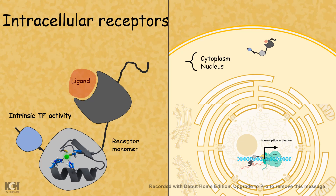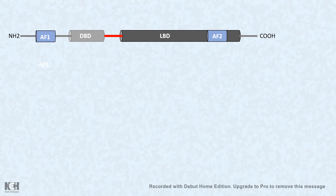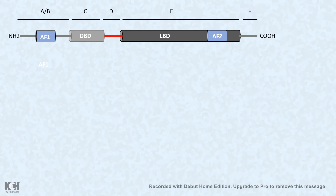If we look at the genetic sequence, it is distributed in several domains: A/P, C, D, E, and F. The AF1 and AF2 domains interact with the RNA polymerase and the general transcription factors, so they are also known as transcription activation domains.